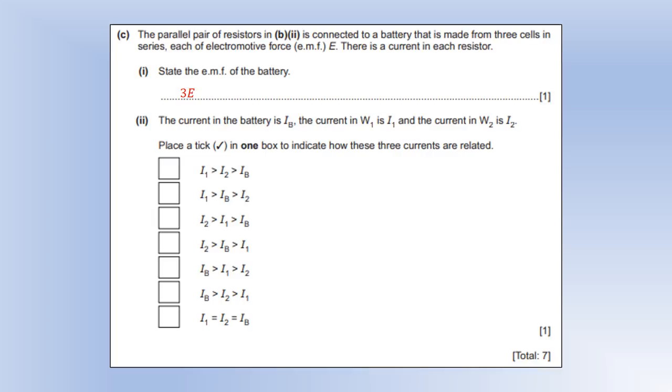The current through the battery is IB. The current through W1 is I1. Current through W2 is I2. Tick the box to indicate the three currents. So with a parallel circuit, the biggest current is going to be in the battery. So it has to be one of the bottom three. And then in a parallel circuit, you get a bigger current through the smaller resistor. Now we know the smaller resistor is W2. So the current through it is going to be bigger than the current through W1.